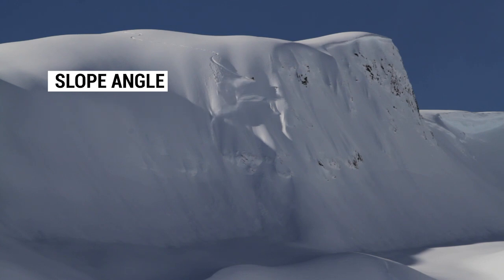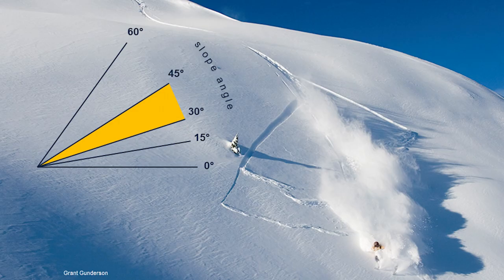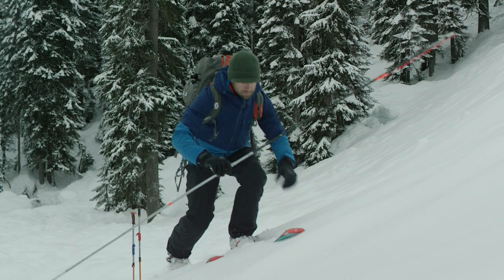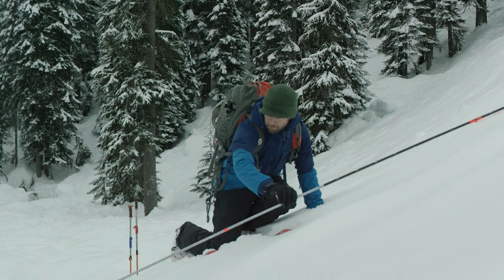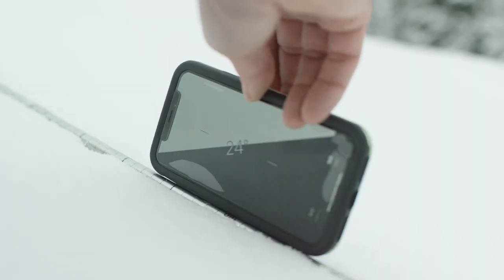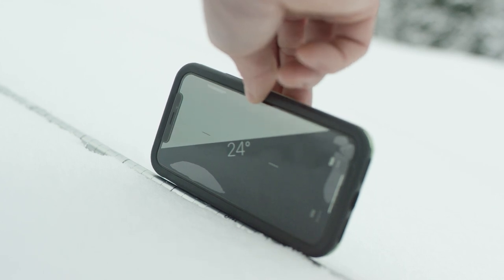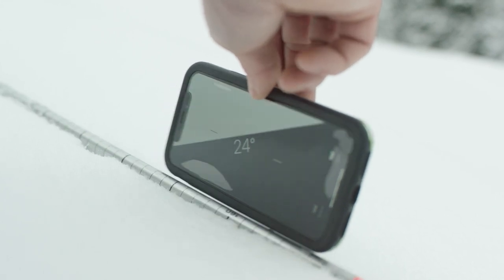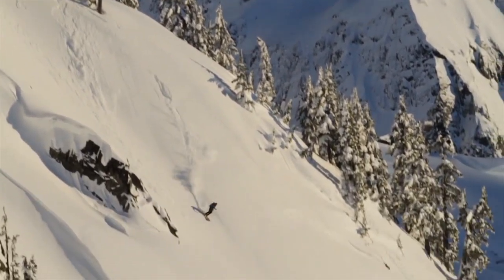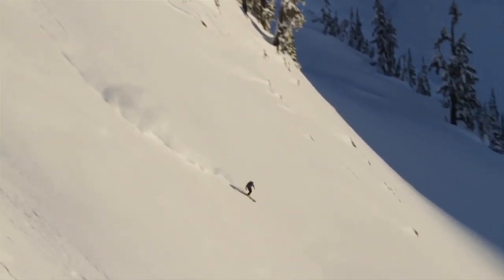Slope angle is the primary factor in determining where avalanches start. Most slab avalanches occur on slopes between 30 and 45 degrees. Measuring the angle of a slope gives you the clearest indication if you're in avalanche terrain. When considering slope angle, assess not just the slope you are or intend to be on, but also slopes above you.